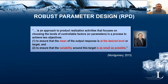Robust parameter design, or RPD, is described by Douglas Montgomery in the course book as an approach to product realization activities that focuses on choosing the levels of controllable factors or parameters in the process to achieve two main objectives. The first is to ensure that the mean of the output response is at the desired target level, and the second is to ensure that variability around this target is as small as possible.